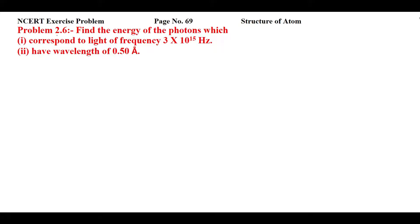This is NCERT exercise problem 2.6 from page number 69 of Structure of Atom. Find the energy of photons which: first, correspond to light of frequency 3×10¹⁵ Hz, and second, have a wavelength of 0.50 angstrom. This question is split into two parts — the first gives frequency and the second gives wavelength.